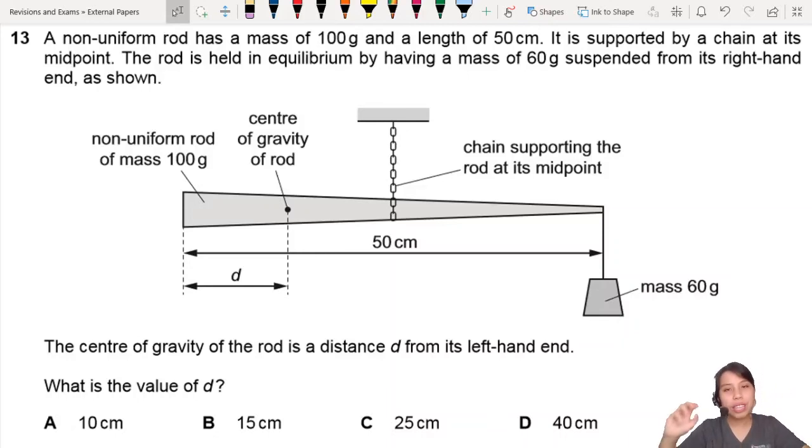If you see a complicated diagram like this, stay calm and know that it is a moments question. A non-uniform rod means it's fat on one side and thin on the other, has a mass of 100 grams. This is important.